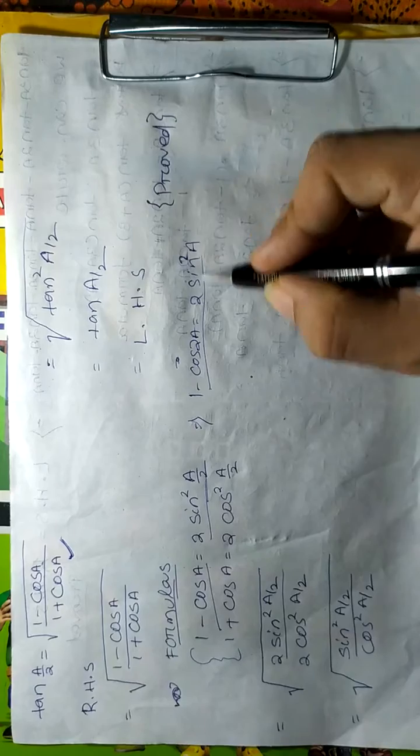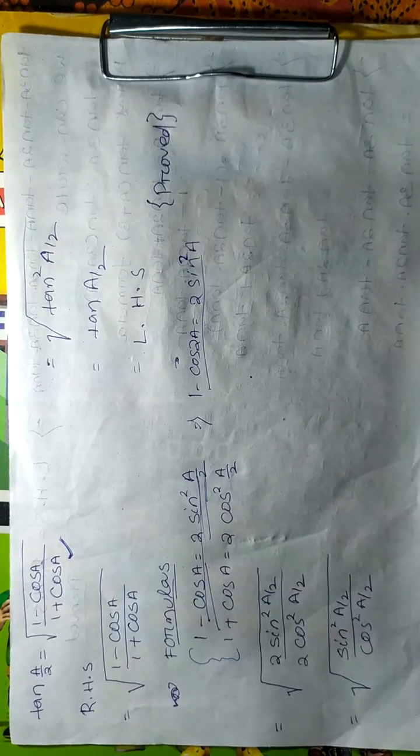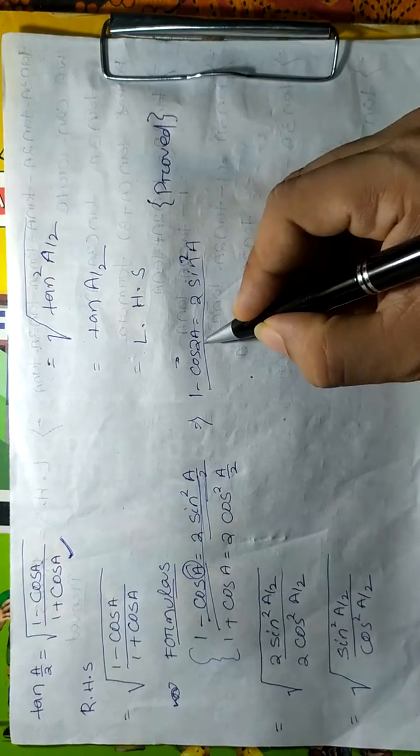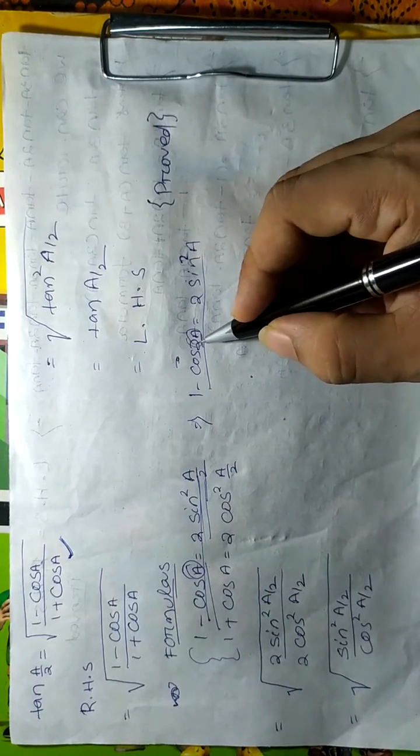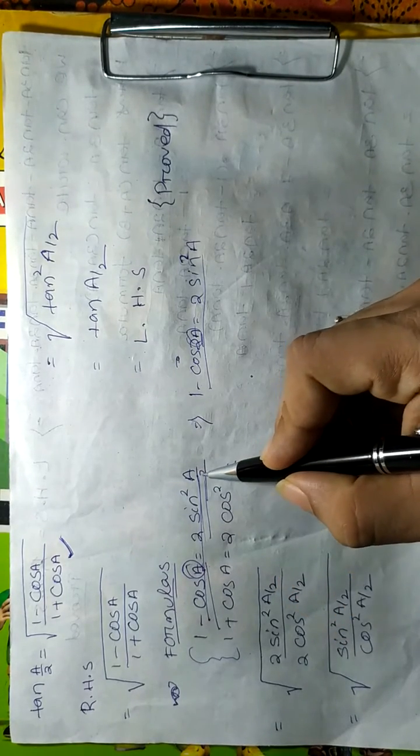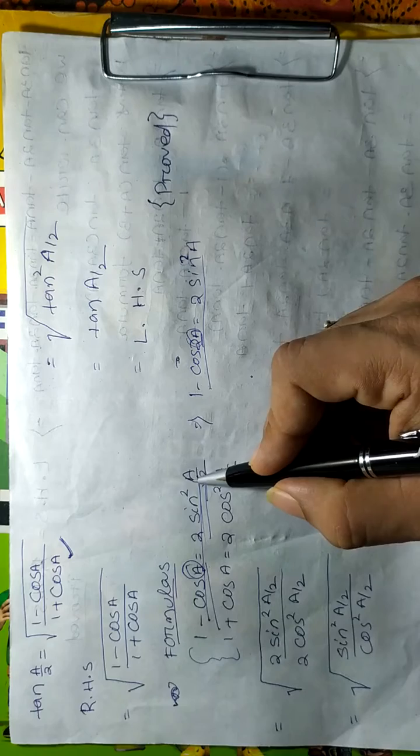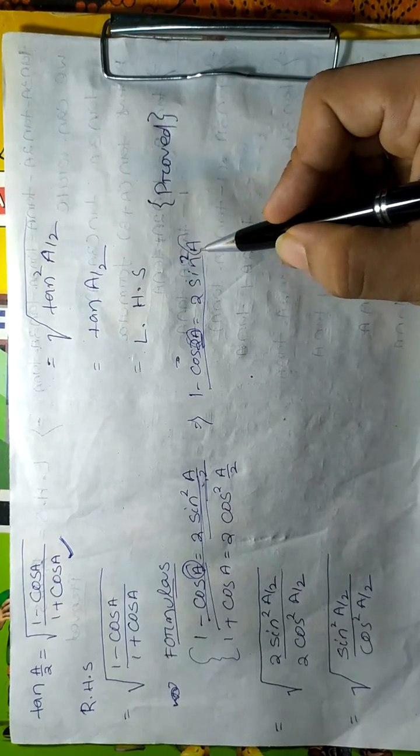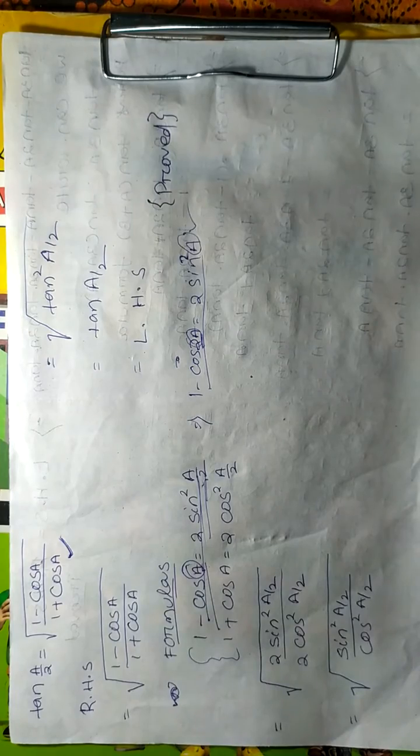These formulas are exactly the same. The different part is: in this case 'a' is present, and in this case '2a' is present. So if 'a' is present, then the RS part is a by 2, and if 2a is present, then the RS part remains a. So putting this value...